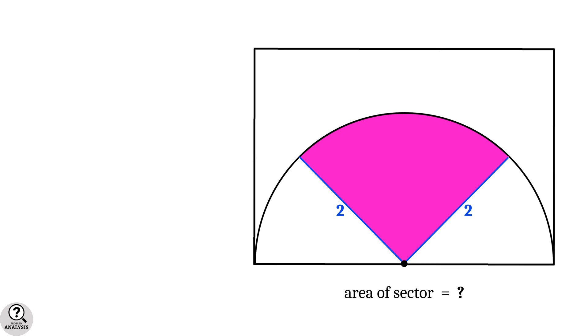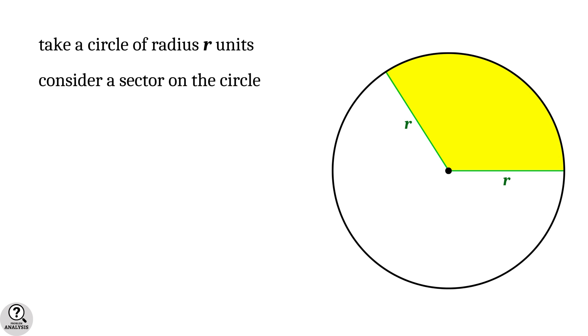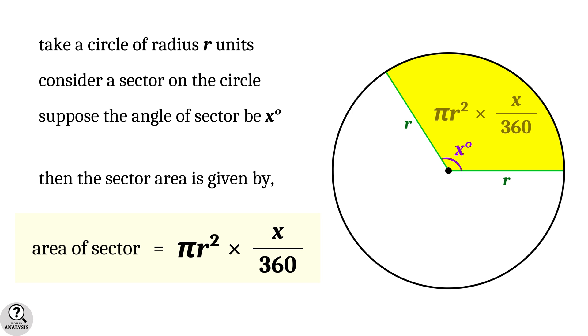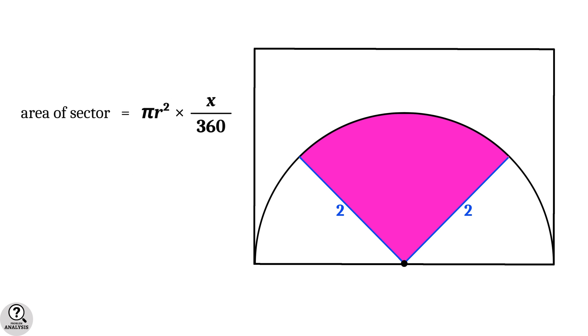Now, how to find the area of a sector? There is a beautiful formula to find the area of a circular sector of any size. Take a circle of radius r units and consider an arbitrary sector on the circle. Suppose the angle of the sector be x degrees, then the area of the sector is given by πr² × (x/360). Now come back to our problem. Here in this sector, radius r equals two units, but what is the angle x? That is why this circle is needed in the problem.